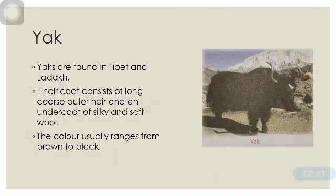Yak. Yaks are found in Tibet and Ladakh. Their coat consists of long coarse outer hair and an undercoat of silky and soft wool. The color usually ranges from brown to black.